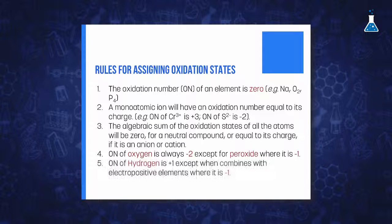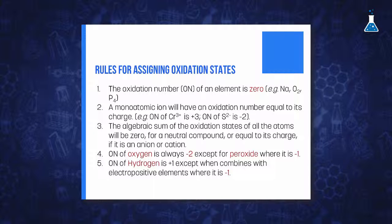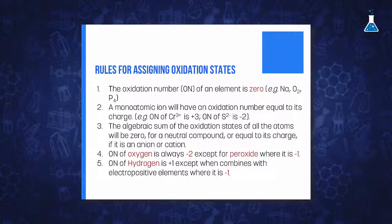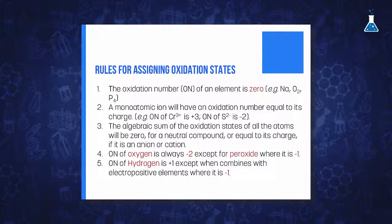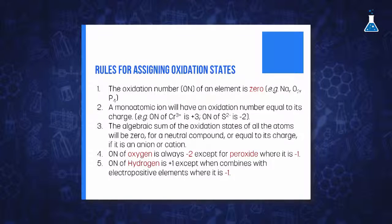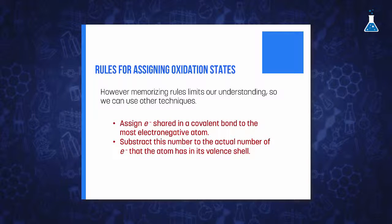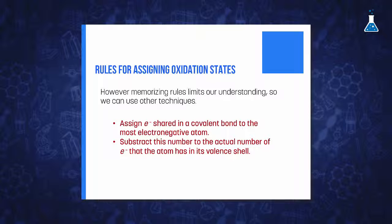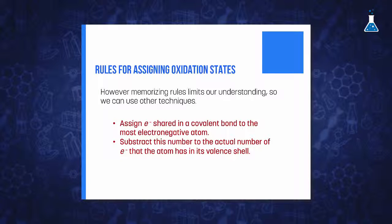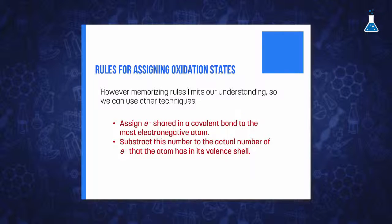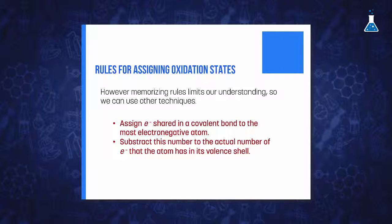Hydrogen is 1+ except when combined with more electropositive elements, where it will be 1−. However, we cannot use these simplified rules for other elements, because the oxidation state changes depending on the compound, and memorizing rules limits our understanding of the concept. Therefore, other techniques exist to unambiguously assign the oxidation number to an element within a compound.